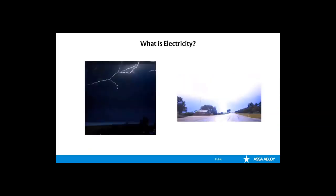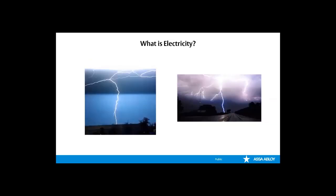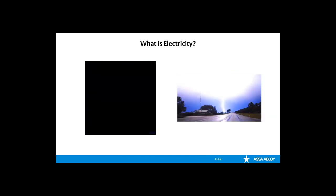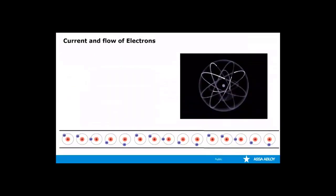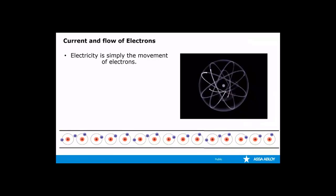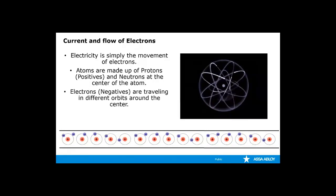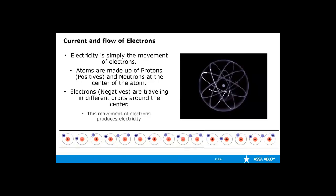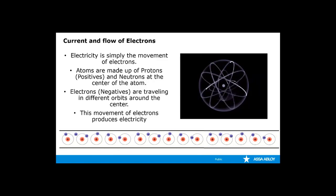What is electricity? The concept of electricity is fairly difficult to grasp because we really can't see electricity except in the form of lightning and static electricity. And when we feel electricity, it's usually unintentional because it hurts and it can be very dangerous. Electricity is simply the movement of electrons. As I hope you realize, everything around you is made up of atoms. Atoms are made up of protons, which are positive, and neutrons, which are neutral, at the center of the atom. The electrons, which are the negative portion of the atom, travel in various orbits around the center of the atom. When electrons are forced to move from one atom to another, this movement is what produces electricity.